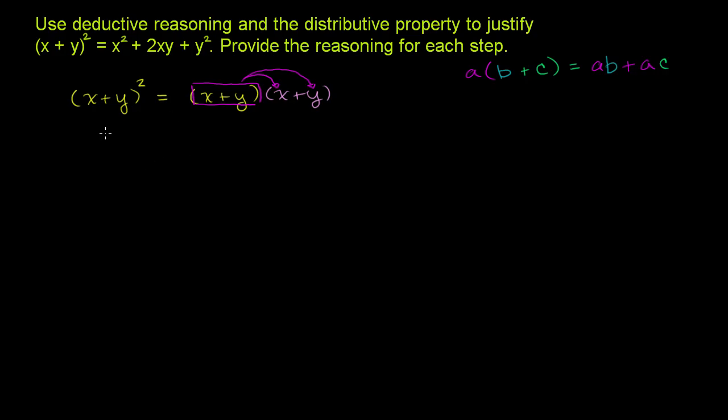So by the distributive property, that's going to be equal to (x + y) times x. And actually, I don't even have to write the x after it. I could just write it there. It doesn't matter whether you multiply x times (x + y) or (x + y) times x. Order doesn't matter. So that's that times that. And then it's going to be plus y times (x + y).